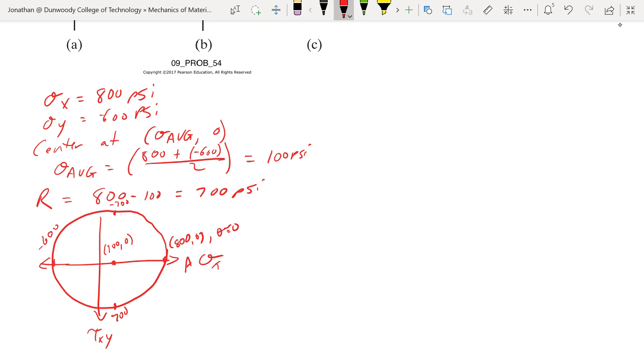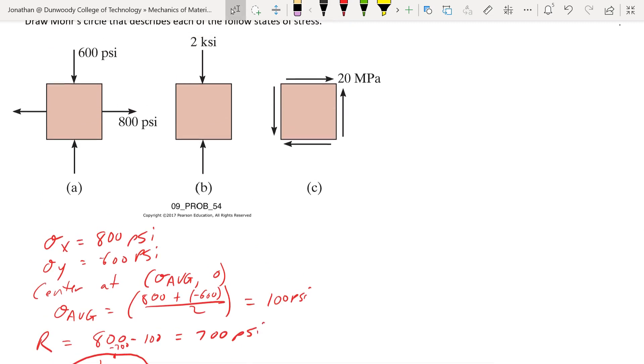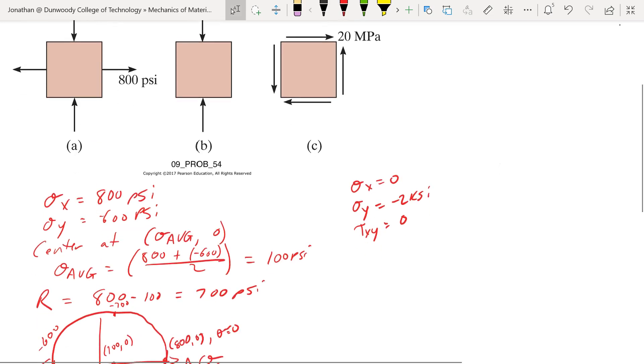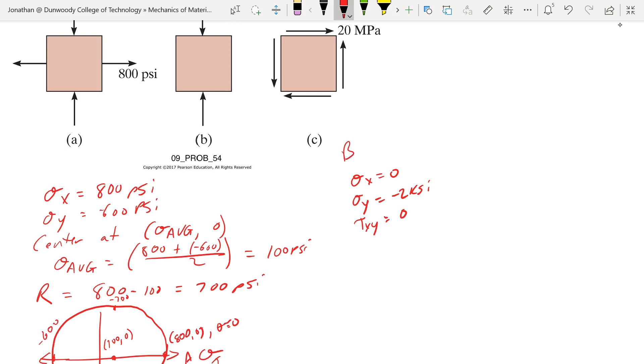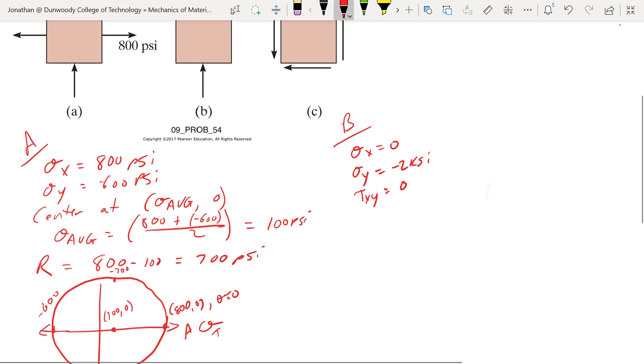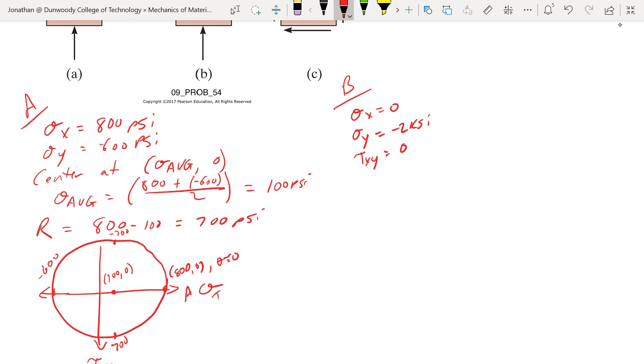For part B, that was part A, now part B: sigma x equals 0, sigma y equals negative 2 ksi, tau xy equals 0. So here our center is at negative 1 ksi, R is going to be 1 ksi.